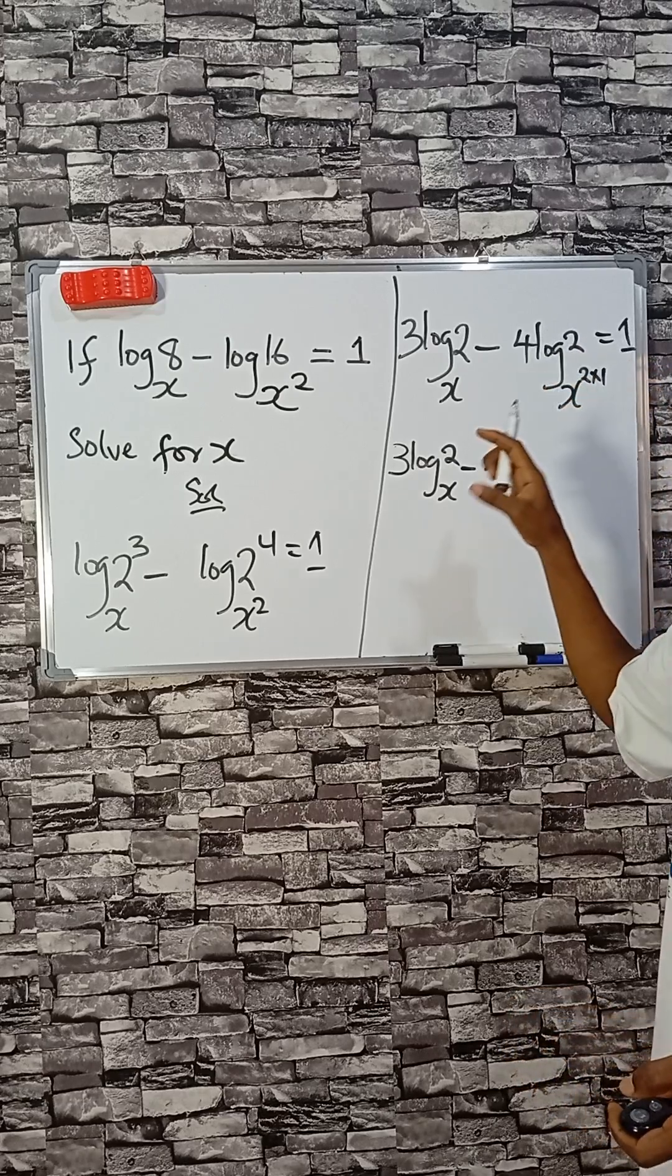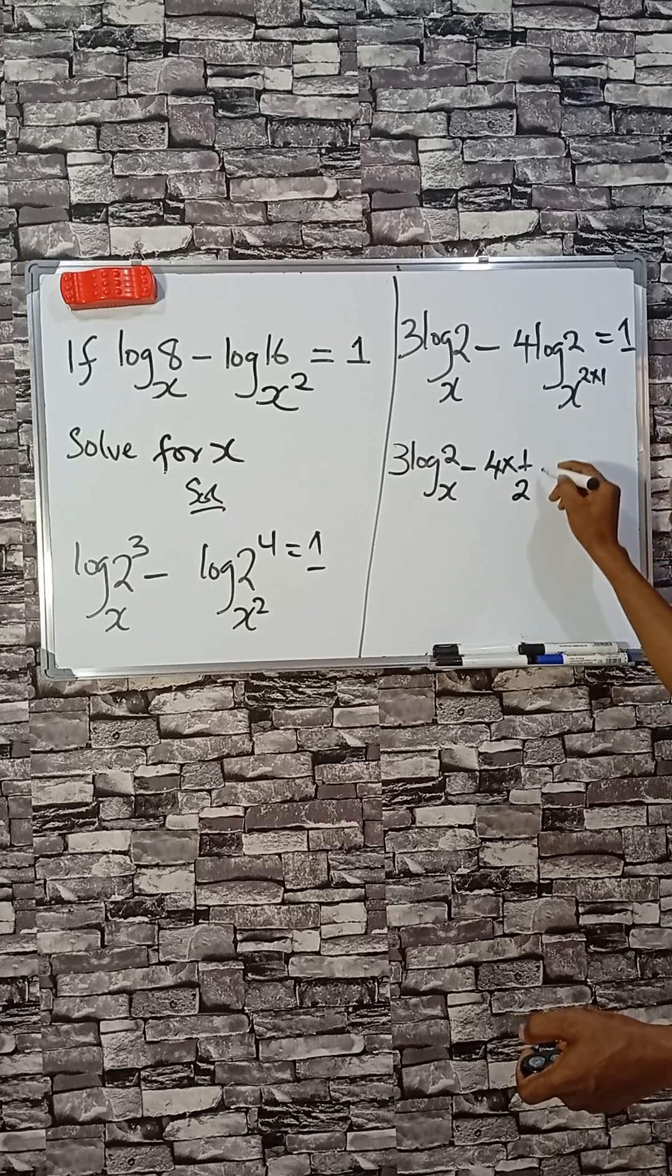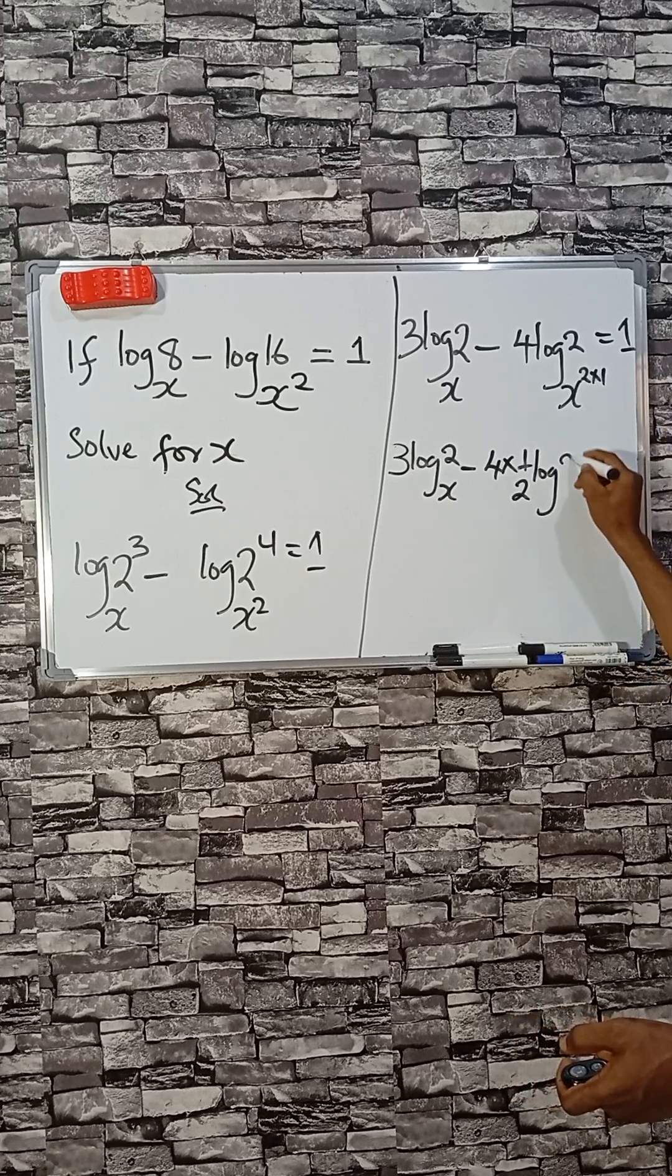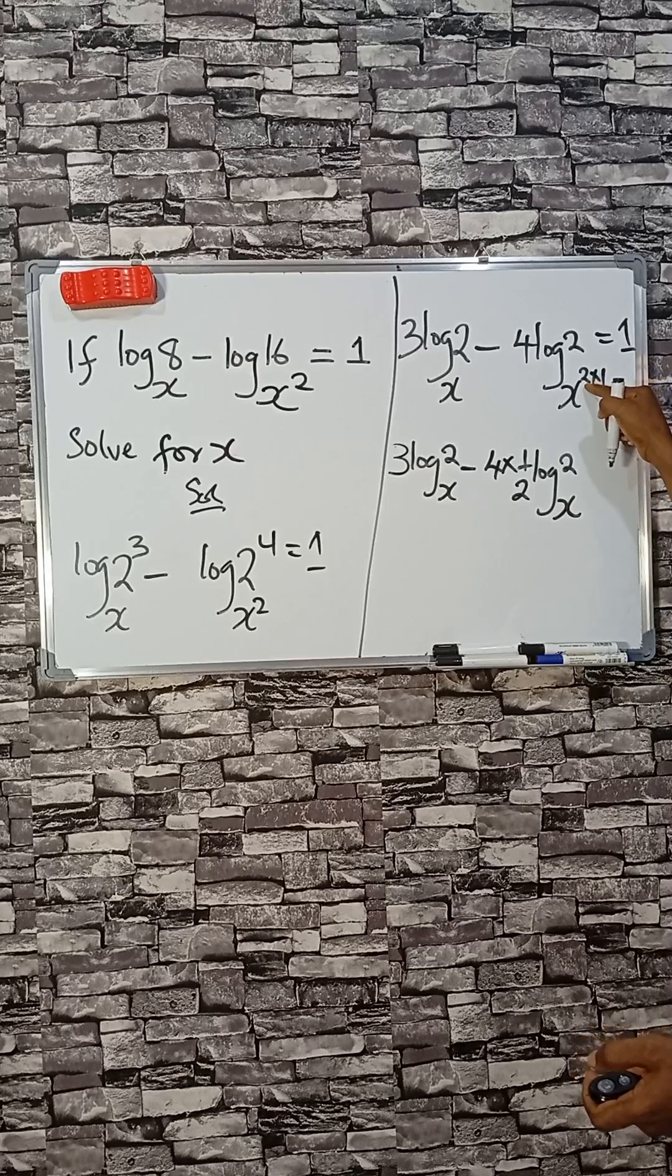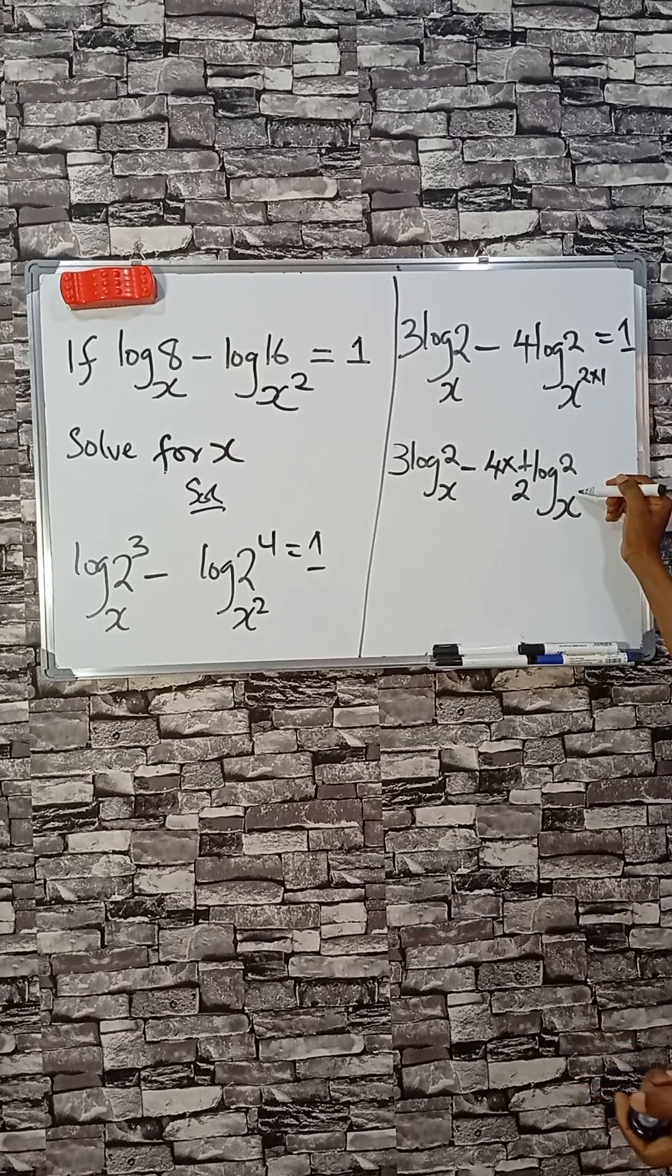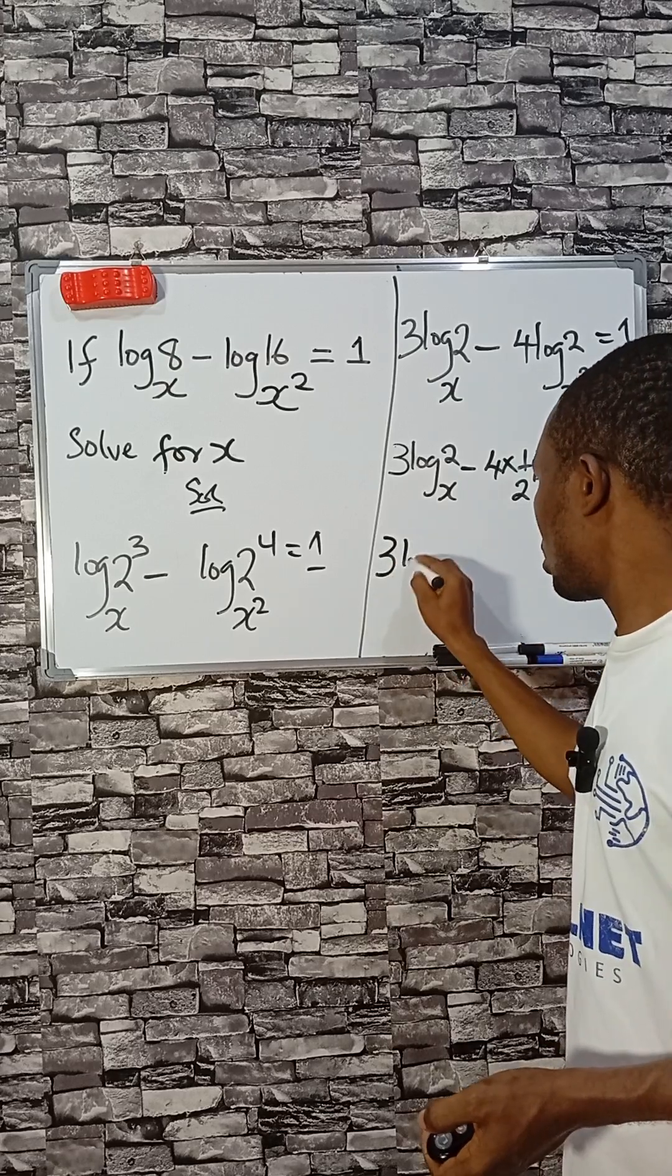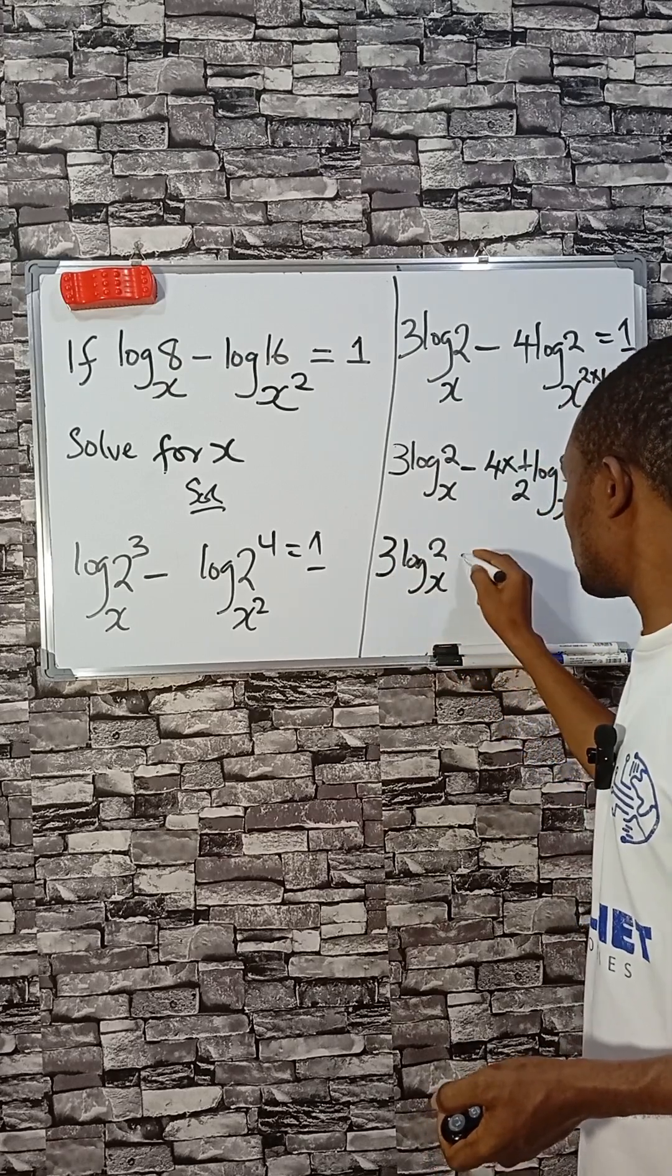So we have it as 1 over 2 log 2 base X. Factor 2 out. Since 2 times 1 is still 2, what is to the power 1? I don't need to write 1 because we know it's 1 already. So now 3 log 2 base X, this can cancel.